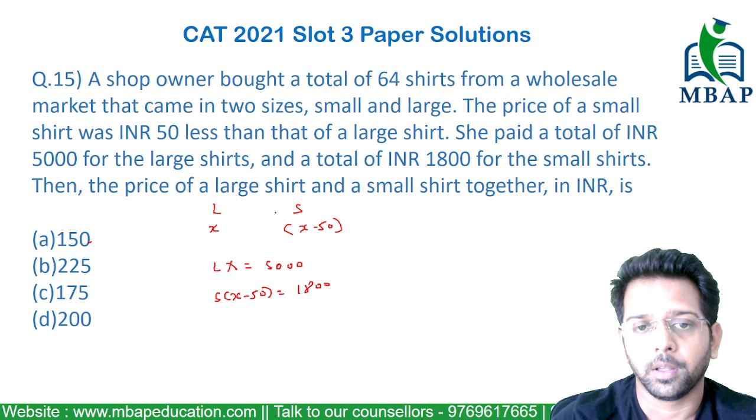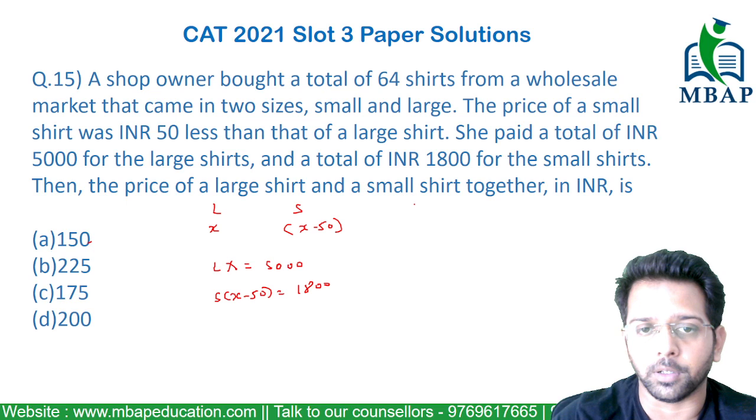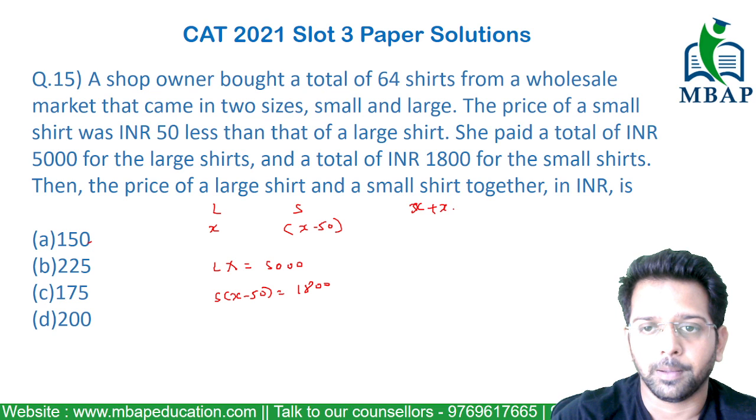The sum total price of large and small together will be X plus X minus 50, which is 2X minus 50.